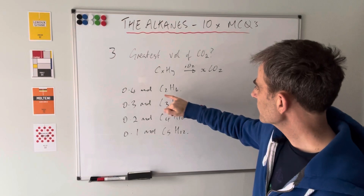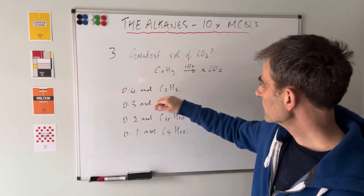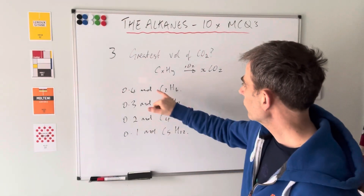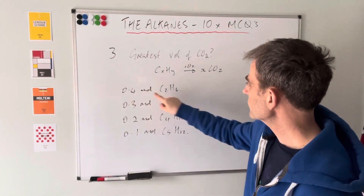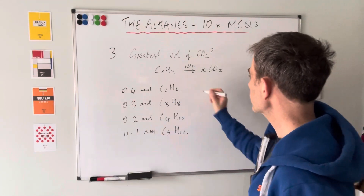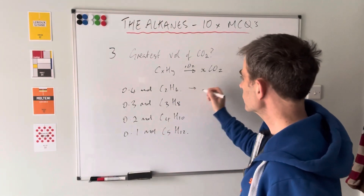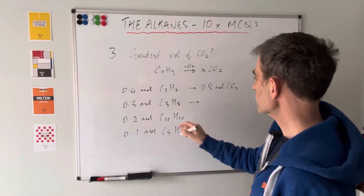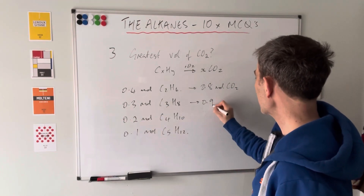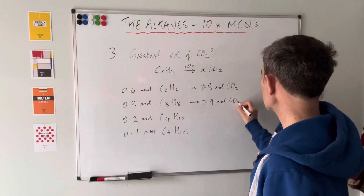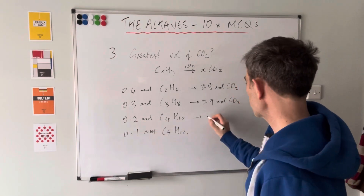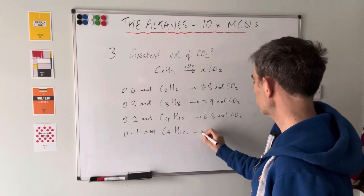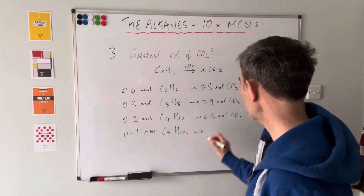One mole of C₂H₆ would make two moles of CO₂, but we've got 0.4 moles, so that gives 0.8 moles of CO₂. For the three-carbon one with 0.3 moles: three times 0.3 is 0.9 moles of CO₂. For the four-carbon one with 0.2 moles: four times 0.2 is 0.8 moles. And five times 0.1 is 0.5 moles.